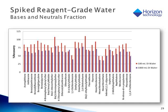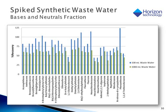Shown are the recoveries for bases and neutrals in reagent-grade water and synthetic wastewater spiked with the test mix. The 100-milliliter and 1-liter sample recoveries are shown side-by-side. A slight edge on recoveries was obtained with the 100-milliliter sample volume in both matrices. The recoveries for reagent water and synthetic wastewater were very similar, with no indications of matrix interferences.